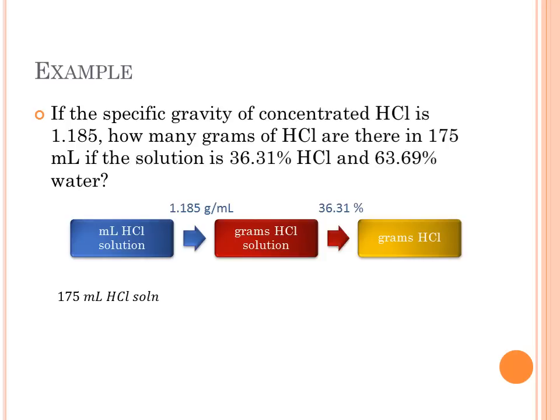So if we start with 175 milliliters of the solution, we'll abbreviate solution SOLN for space, we can use our density as a conversion factor and multiply by 1.185 grams of the HCl solution divided by 1 milliliter.